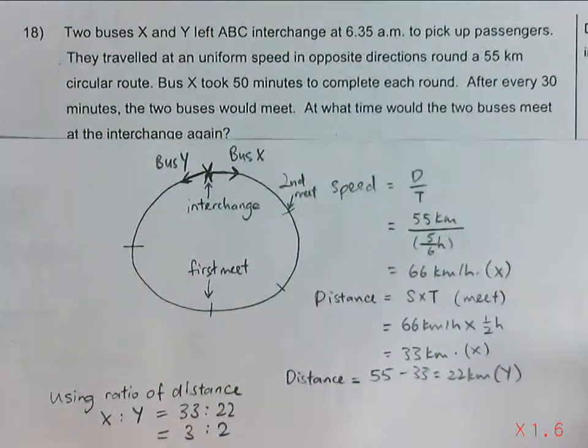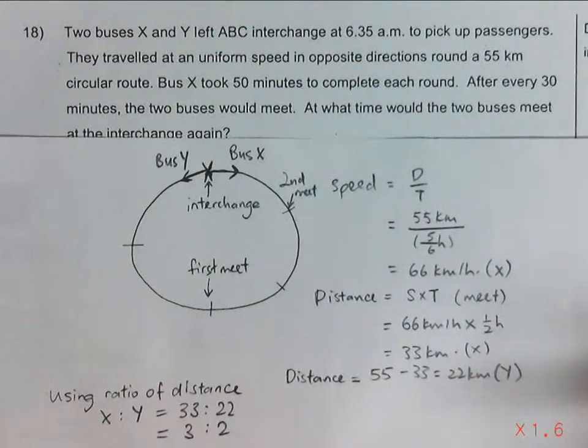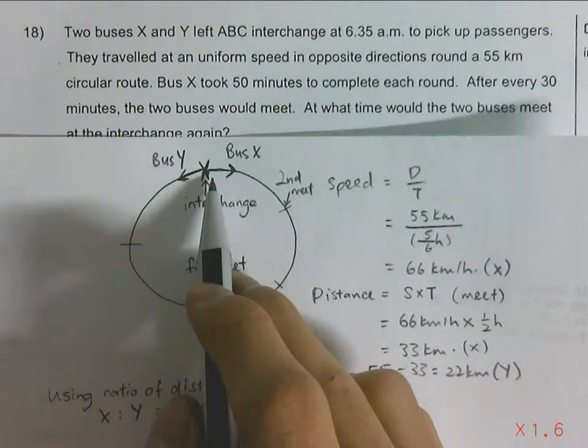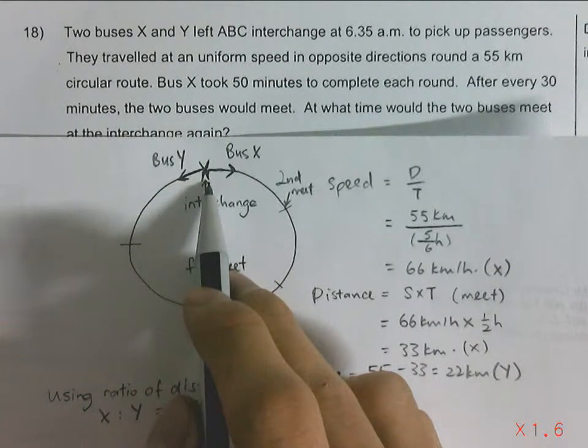So basically you just need to follow the pattern. And there are 2 more meeting points before finally they meet at the interchange.